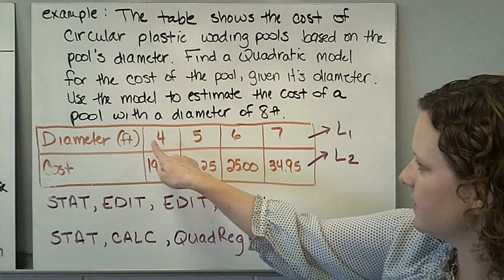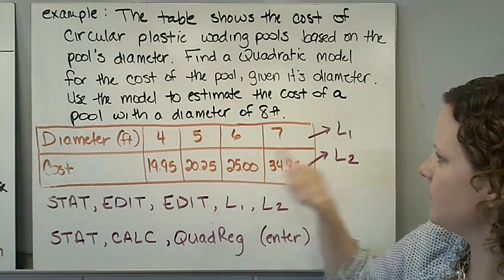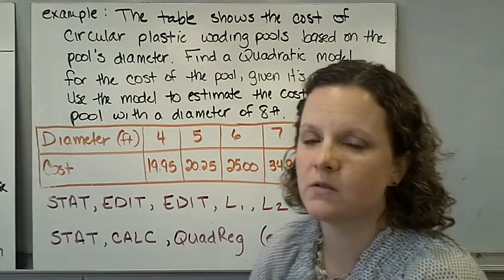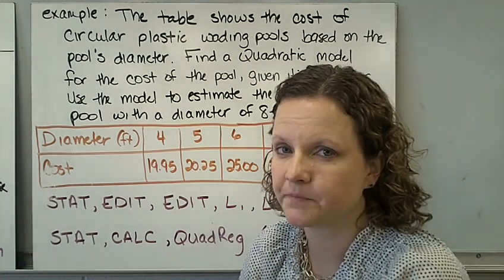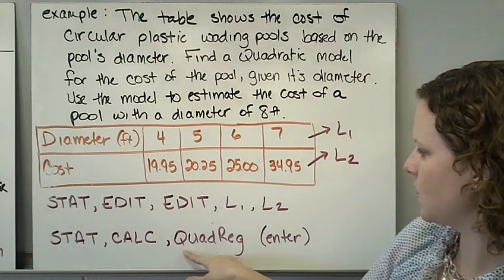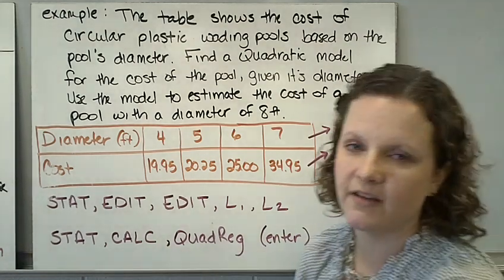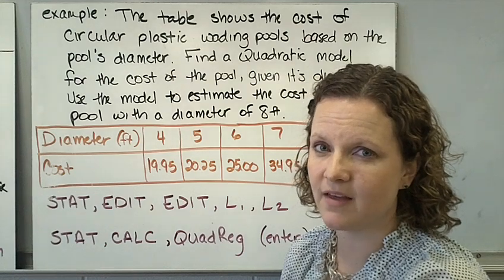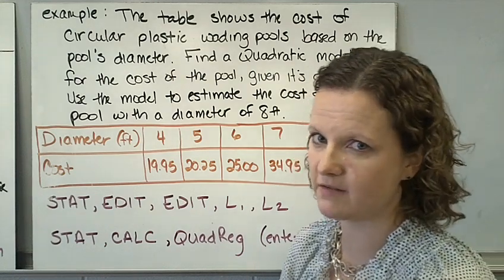Once you're done entering 4, 5, 6, and 7 to list 1 and those 4 numbers to list 2, we're going to do our quadratic regression. So if you hit STAT, CALC, and the quadratic regression, and then you have to hit enter twice, it's going to come up with some information, your quadratic regression.